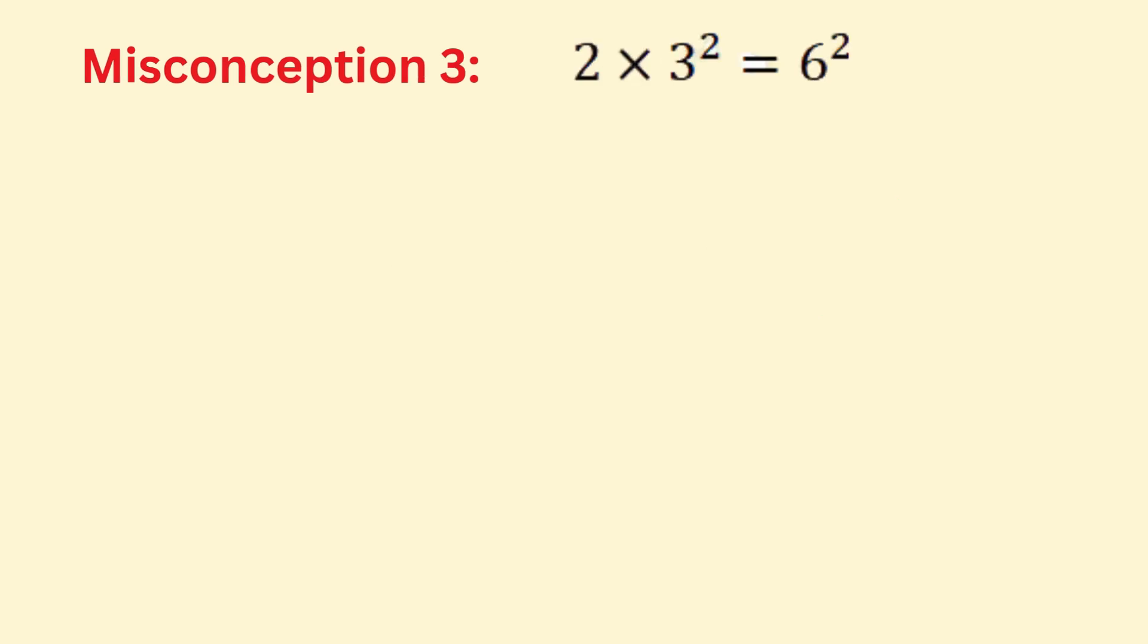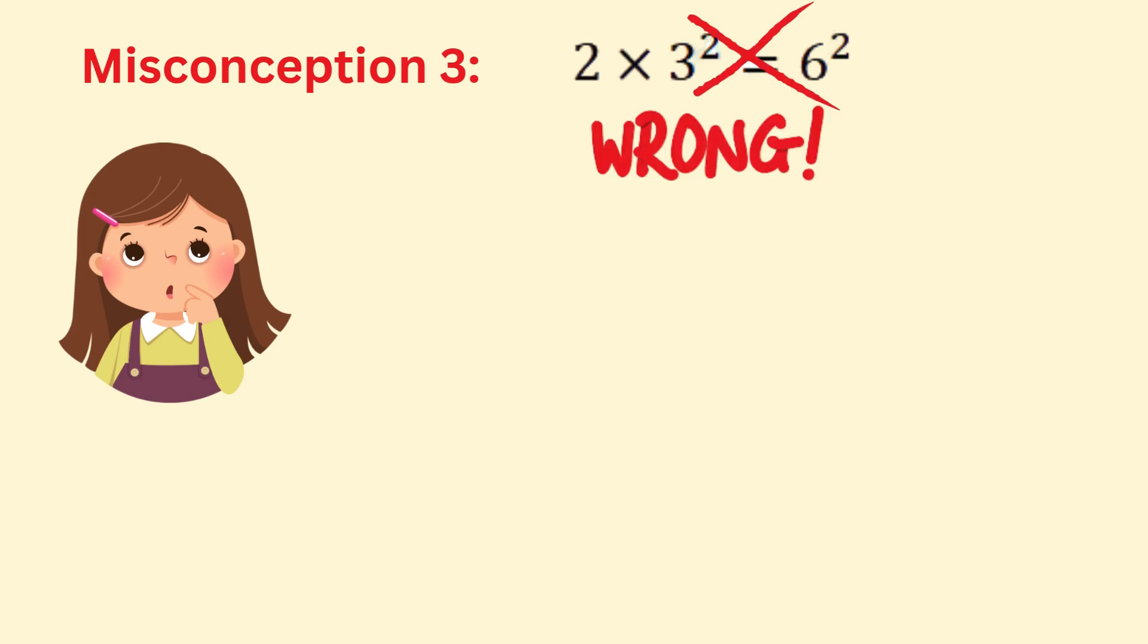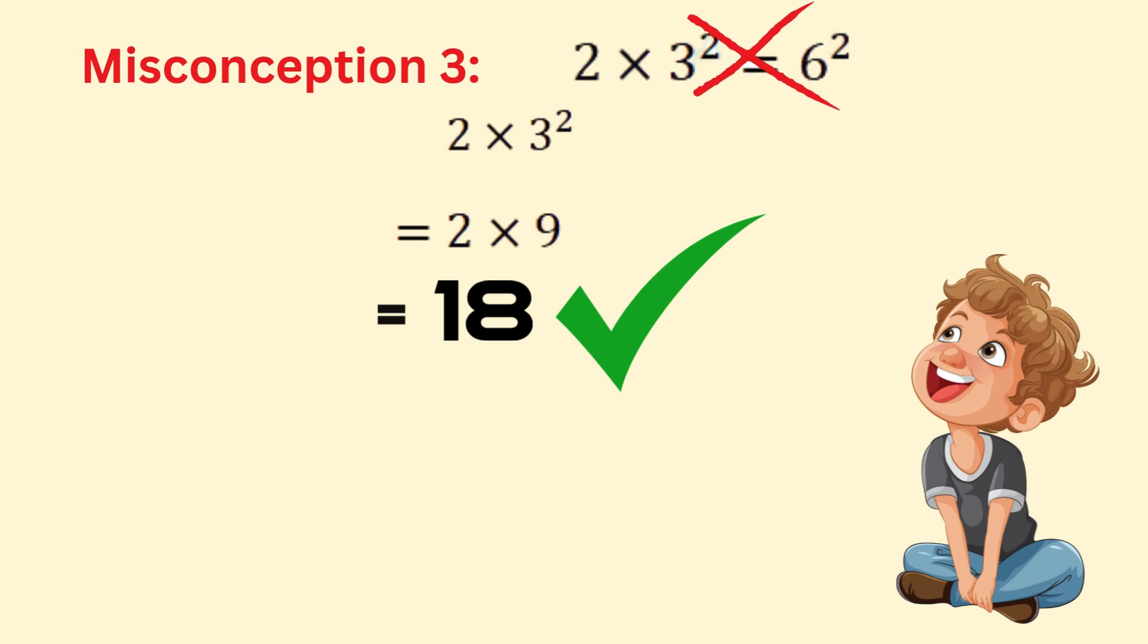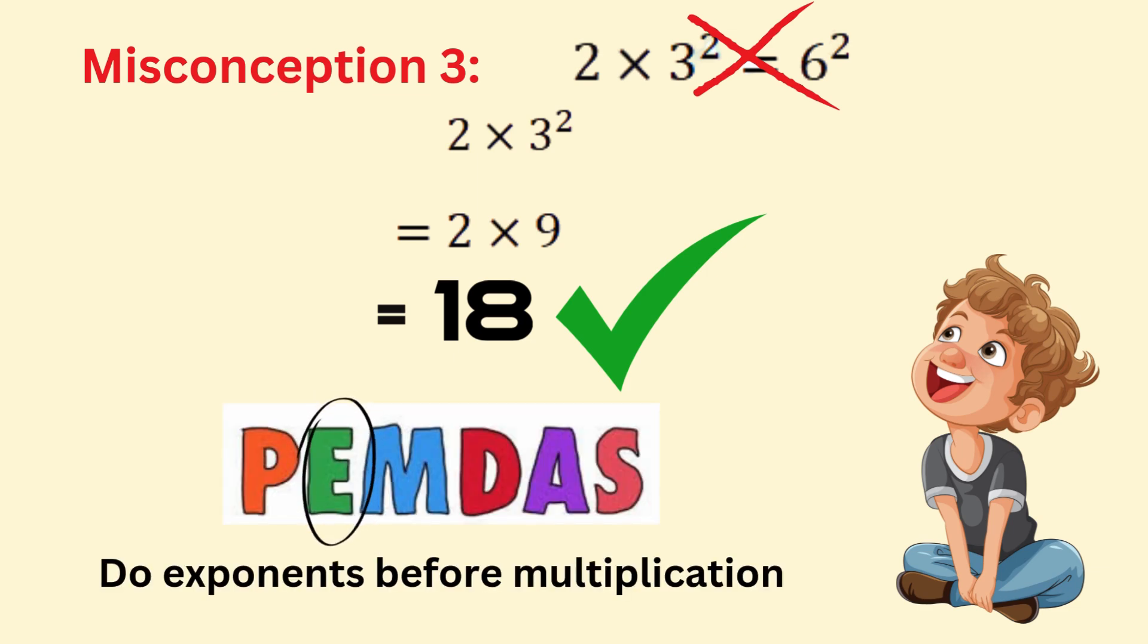Here students sometimes try to multiply the base by two first, but according to the order of operations we need to square three first. So 3² equals 9, and then you multiply by 2, giving you 2×9 = 18. Key tip: follow the order of operations, exponents before multiplication.